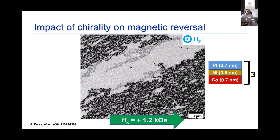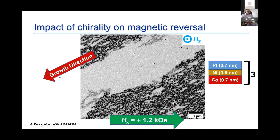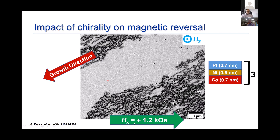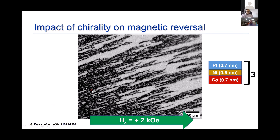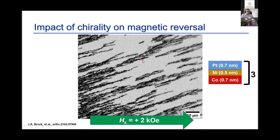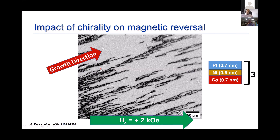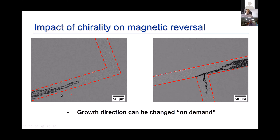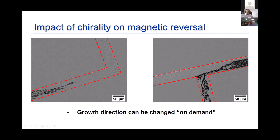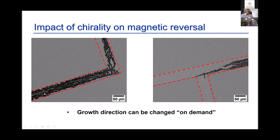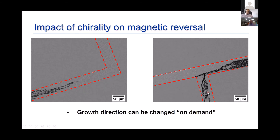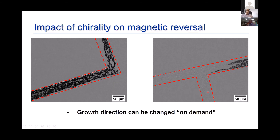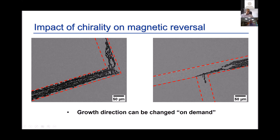Increasing the in-plane field, the domain growth direction shifts. At higher fields it rotates roughly 180 degrees and starts growing in the opposite direction. This change in growth direction with in-plane field magnitude is also demonstrated in a patterned wire: for one in-plane field the domains grow one way, change the field and they grow the other way — and you can even get them to bend around a corner. This confirms the effect is not related to nucleation but to the spin structure at the growth front.